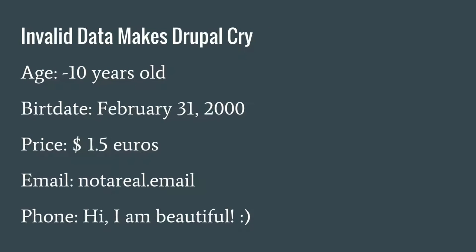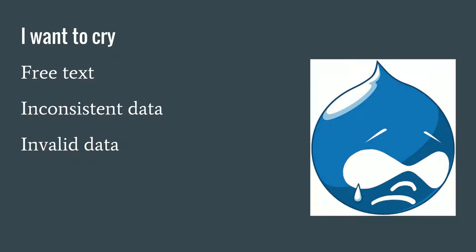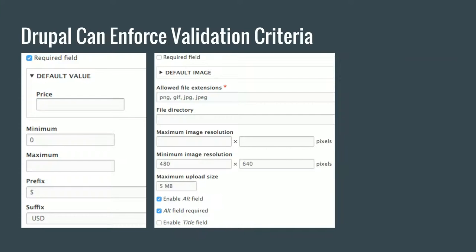Data can also be invalid — like minus ten years old, February 31st, a price with the dollar sign but the euro amount, an email missing the at sign, or a phone number field where someone writes 'I am beautiful.' That's not even a number. This is all possible with free form text. Free form text, inconsistent data, and invalid data makes Drupal cry. So how can you make Drupal happy again? Using fields.